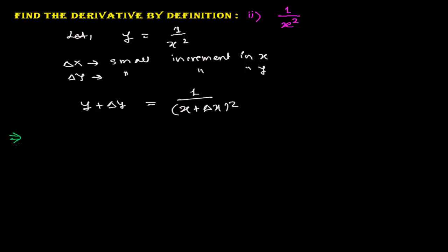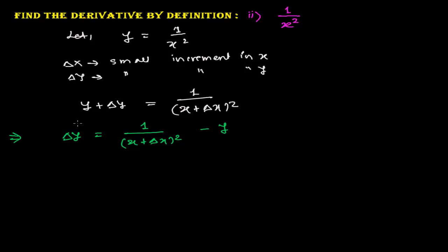In the next step, I will put delta y on the left side and everything else on the right side: 1 over (x plus delta x) squared minus y. As I mentioned, we generally keep delta y on the left side and everything else on the right side, because finally we need to get delta y over delta x and take the limit as delta x tends to 0.